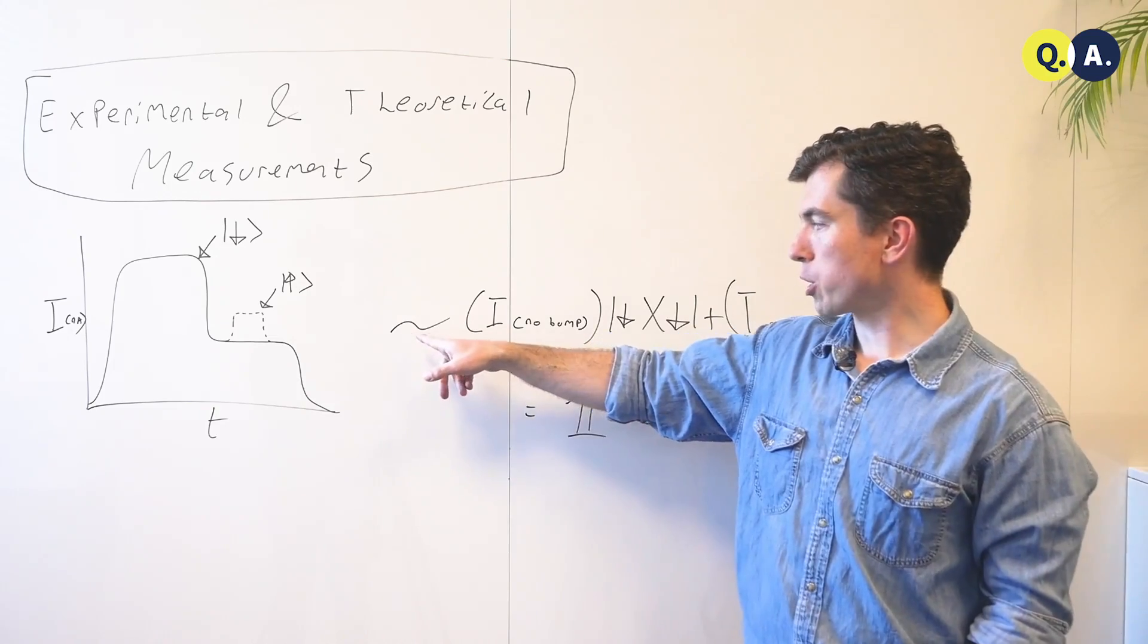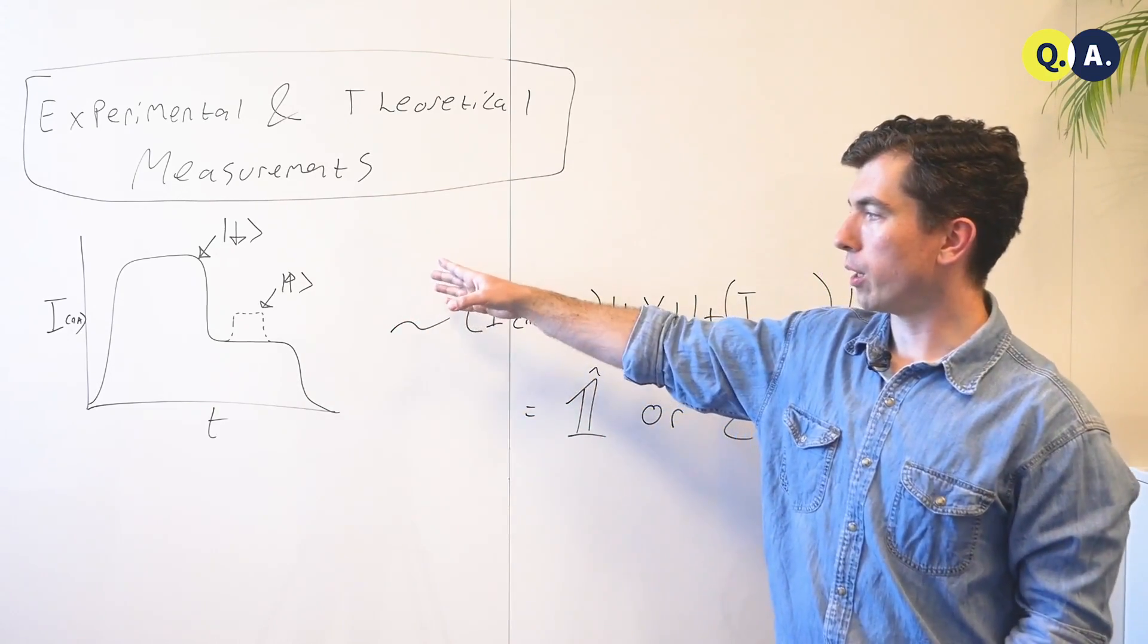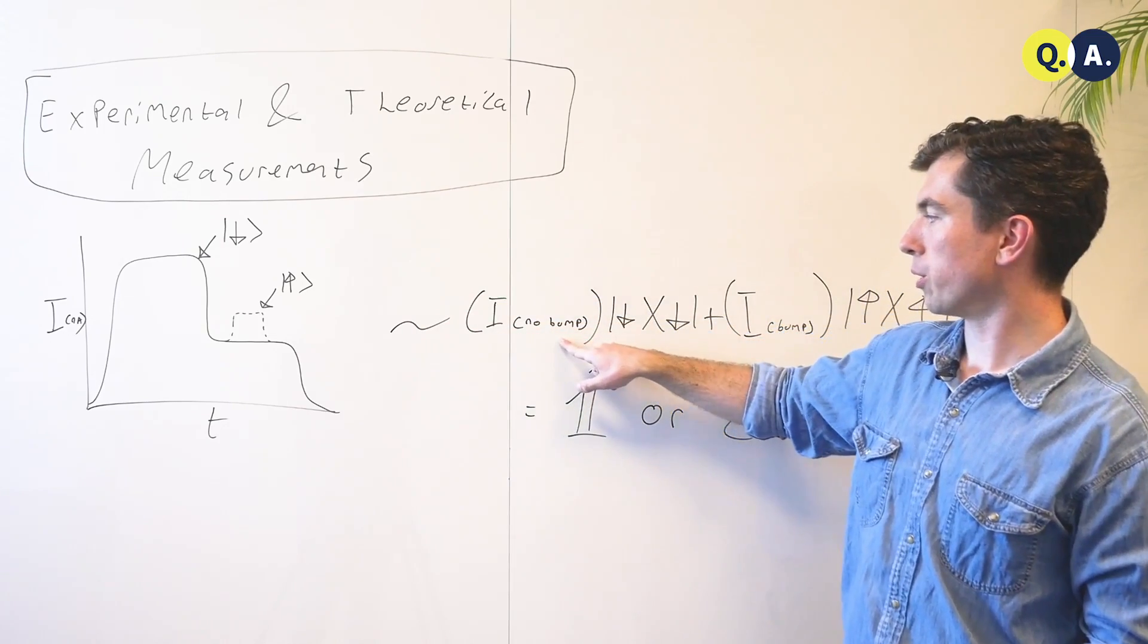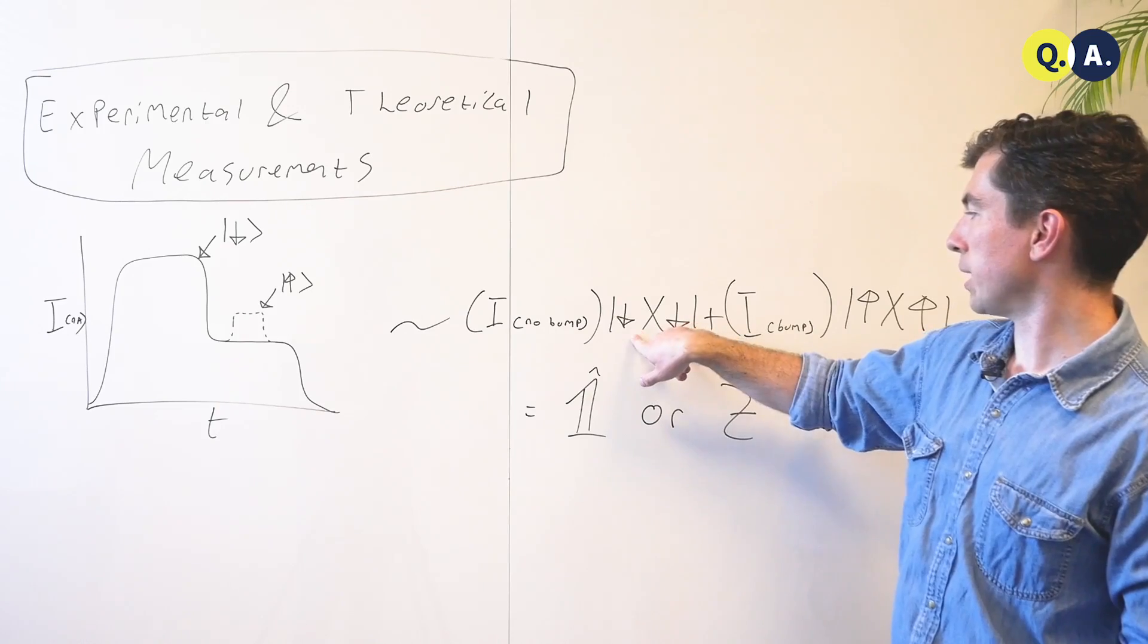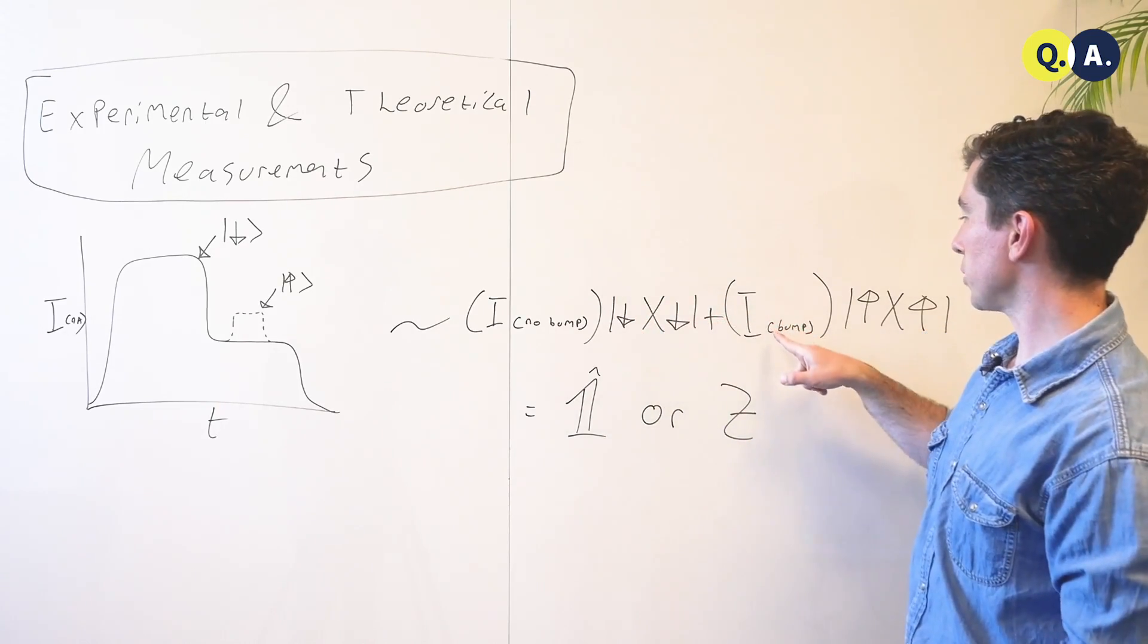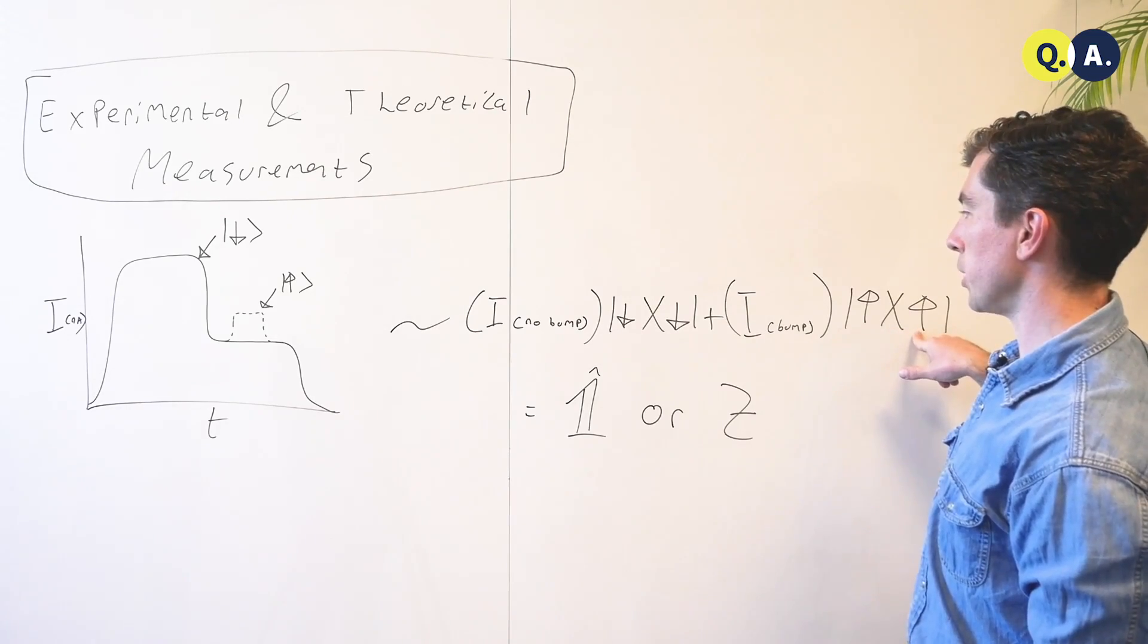And this relates to a measurement operator. You can imagine that we take the total area under this curve, the total amount of current in the case that there's no bump, and that corresponds to the spin down state. And the total current in the case that there is a bump will be slightly higher, and that corresponds to the spin up state.